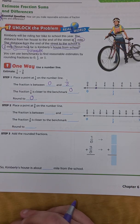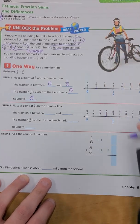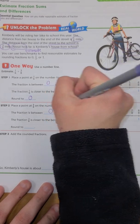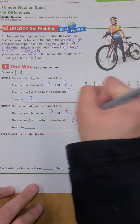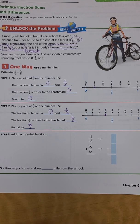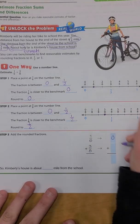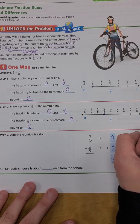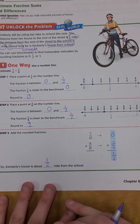Then we place 3/8 on the number line. The fraction is still between 0 and 1/2, but 3/8 is closer to the benchmark of 1/2, so we round it to 1/2. Now we add the rounded fractions: 1/6 rounded to 0, and 3/8 rounded to 1/2. So our estimated sum is 1/2 — Kimberly's house is about 1/2 mile from school.